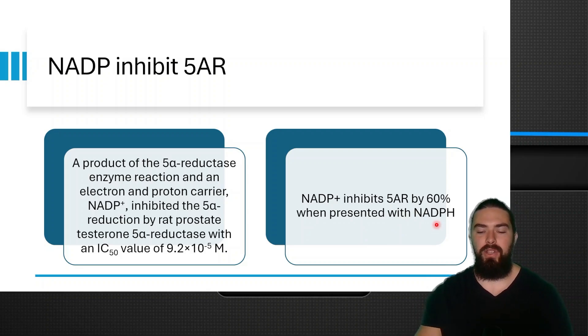If you want to maximize your DHT, you want to have a lot of NADPH as a cofactor in relation to NADP. Then your 5-alpha reductase will work better.